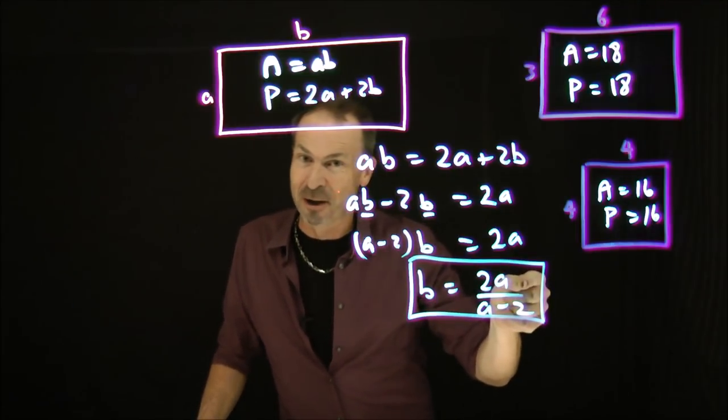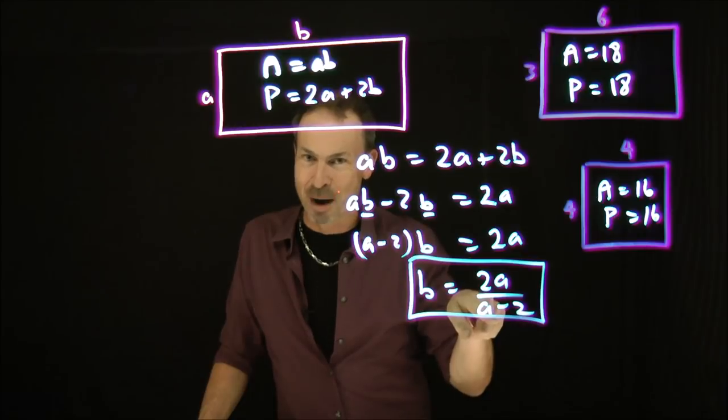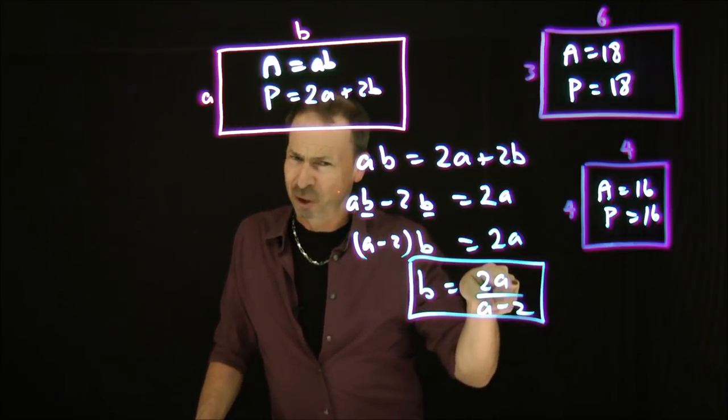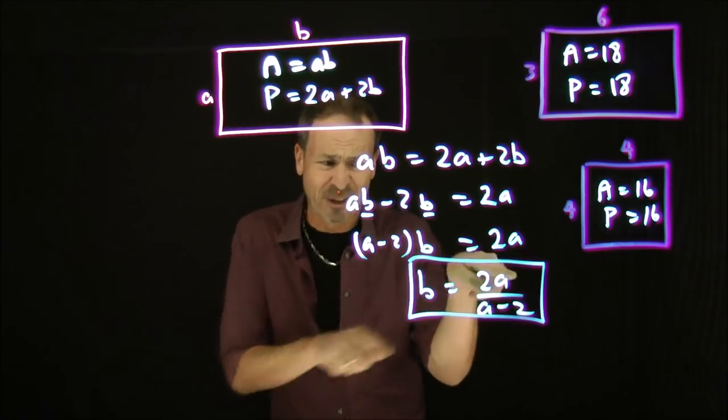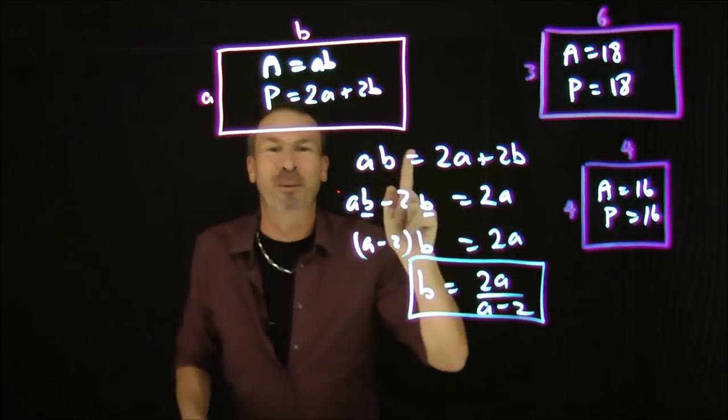So I want the top line to be a multiple of the bottom line. The trouble is the bottom line is complicated. It's A minus two and the top line is two A's. I'd love to have actually A minus two up there. This is what I'm going to do.